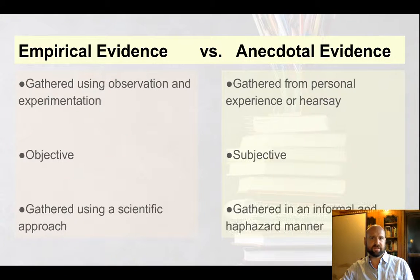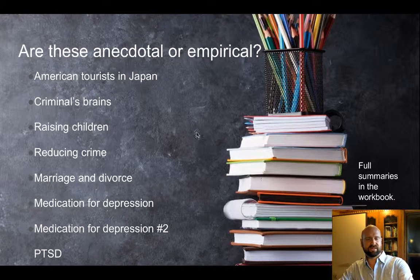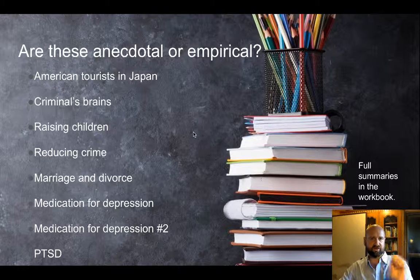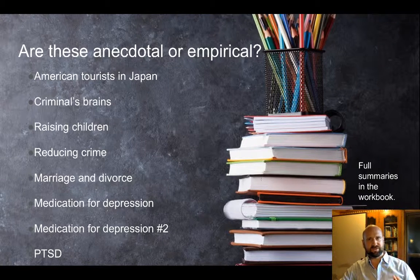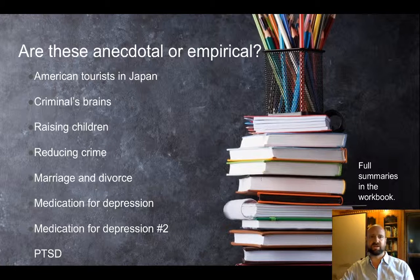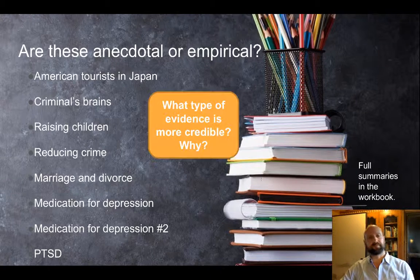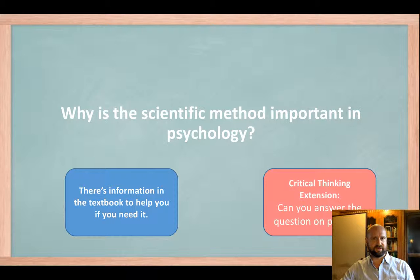Empirical evidence versus anecdotal evidence — this leads into the next example in the workbook, where there's a list of types of evidence and students write down whether each is anecdotal or empirical. Students always want to use anecdotal evidence at the beginning of the course, so we stamp that out and get them thinking: what does the research say? If we're answering questions in psychology, the first question should be, what does the research say? — as opposed to, well, what do I just think about that? One extension question: what type of evidence is more credible and why, for fast finishers. Then they answer the guiding question and the critical thinking extension.